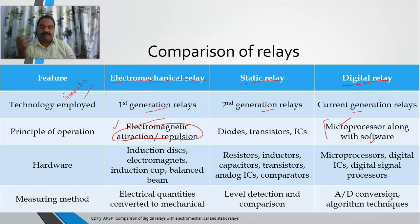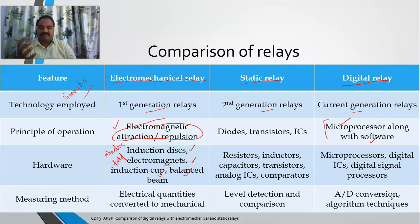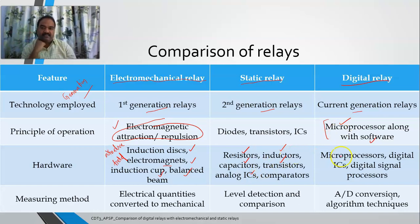Coming to the components employed: electromechanical relays use armatures, fields, induction discs, electromagnets, induction cups, permanent magnets, and balanced beams. Static relays use resistors, inductors, capacitors, semiconductor devices like diodes and transistors, analog ICs, and predominantly comparators. Digital relays use microprocessors, digital ICs, and digital signal processors (DSPs).